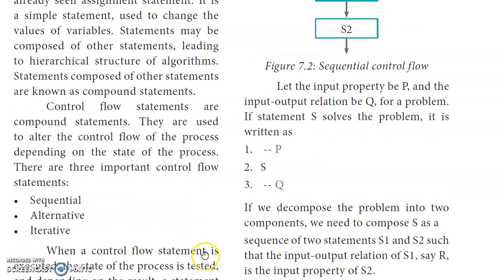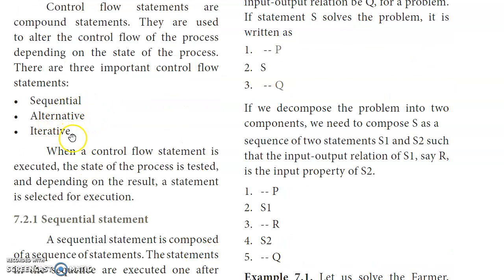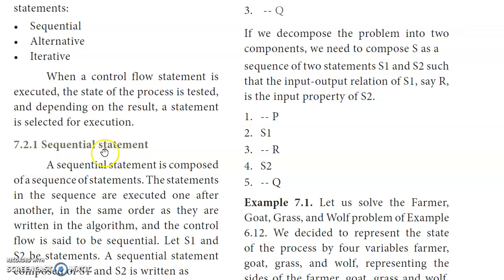There are three important control flow statements: sequential, alternative, and iterative. In control flow statements, the state of the process is tested, and based on the values of variables and the result of that test, statements are executed. Sequential is the first type of control flow statement. As the name suggests, it is a sequence of statements executed one after another in the same order as they are written in the algorithm.